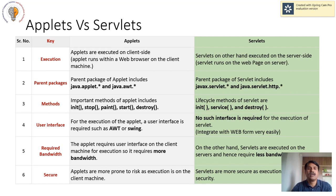Servlets and applets are different on six different aspects. If you look at the execution method of applet, applets are executed on the client side, whereas servlets are specifically executed on the server side. As far as packages are concerned for applets, they use the java.applet.* library as well as java.awt, that is Abstract Window Toolkit.